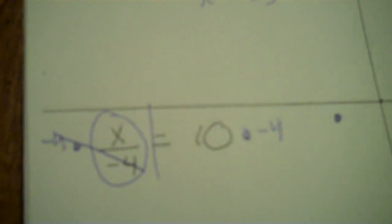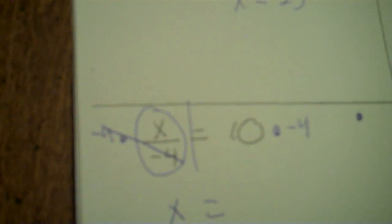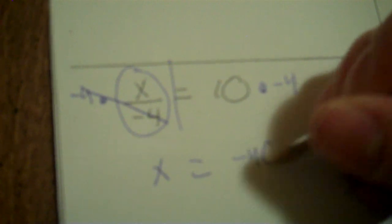Next problem. x is on this side. Between the x and the 8, just look at the operations on that side — plus, minus, times, divide. Between there, there's a division. I like to circle division like I do multiplication. But if I have division, to solve it, I times. So I times each side by negative 4. Because that gets rid of the divide by negative 4. So you've got x. 10 times negative 4 is negative 40.